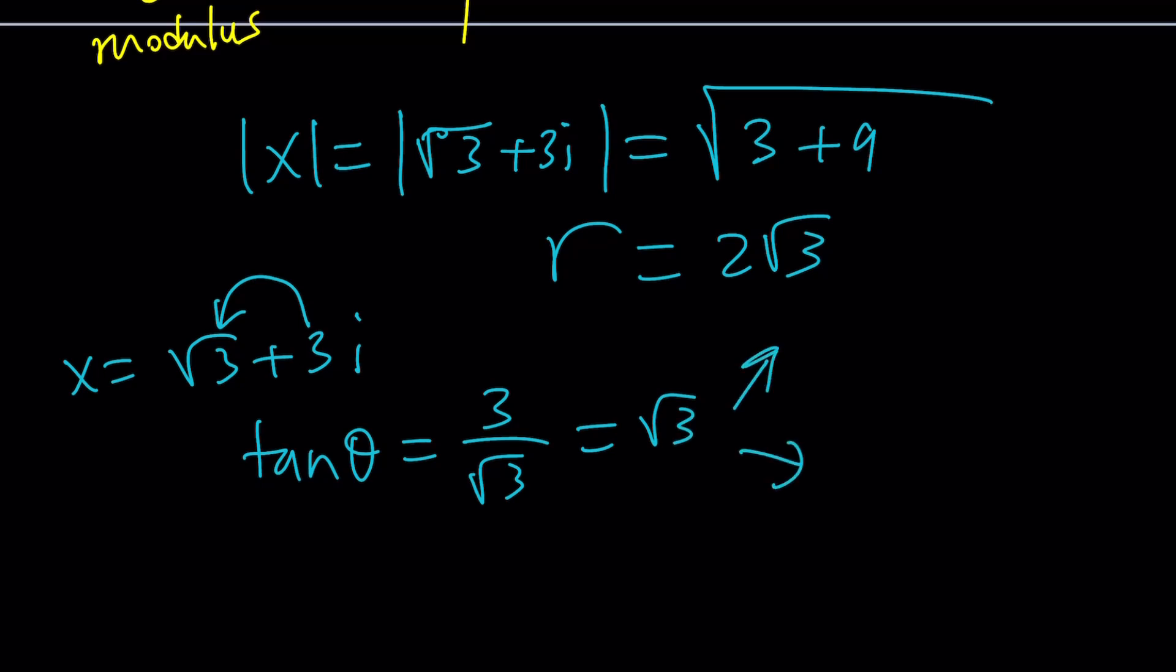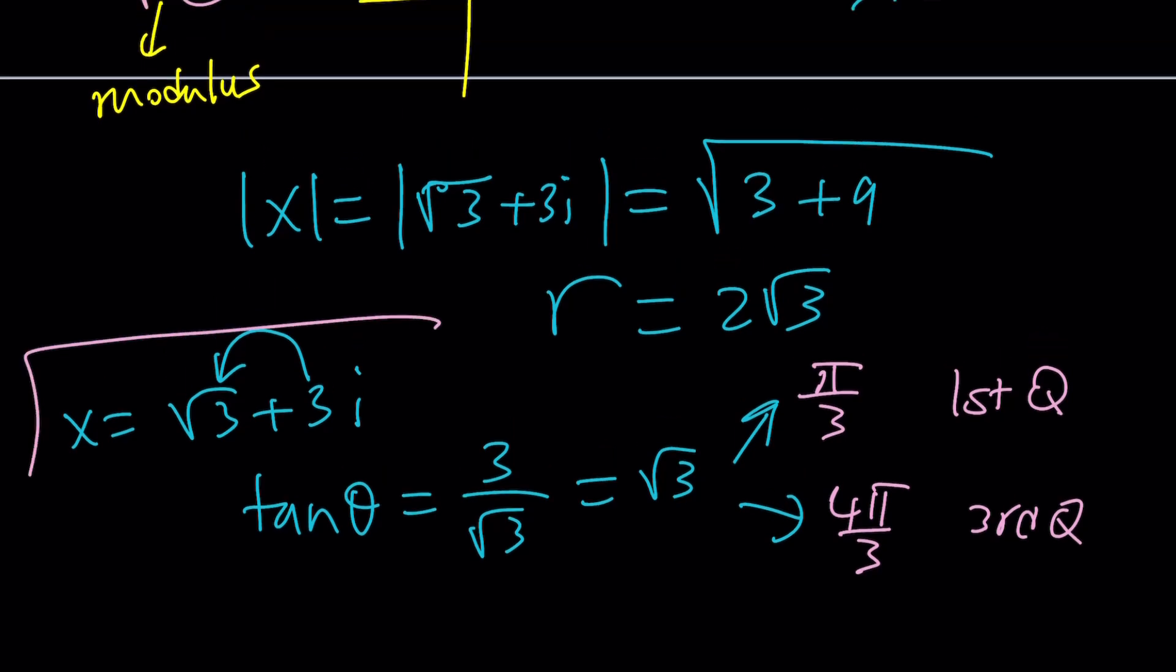But there are two angles whose tangent is root 3. One of them is 60 degrees, which can be written as pi over 3. And the other one, the tangent is positive in the third quadrant. In that case, you add pi to it, and that gives you 4 pi over 3. So there are two angles. But remember, this is the third quadrant, this is the first quadrant. Looking at this number with the real and imaginary parts, they're both positive. So our number cannot be in the third quadrant.